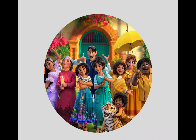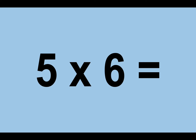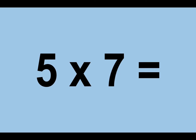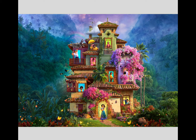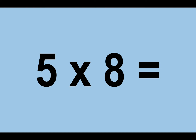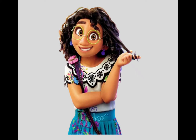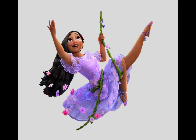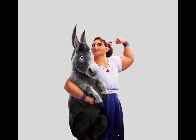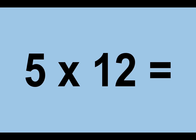Five times four equals twenty. Five times six equals thirty. Five times seven equals thirty-five. Five times ten equals fifty. Five times eleven equals fifty-five. Five times twelve equals sixty.